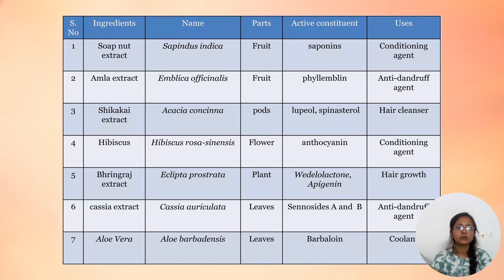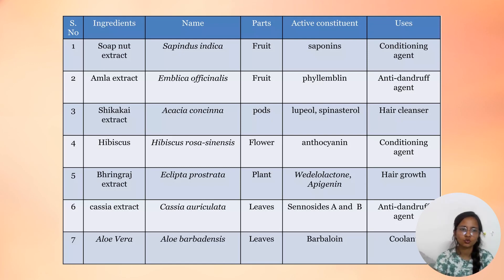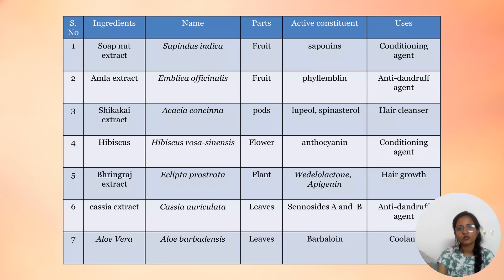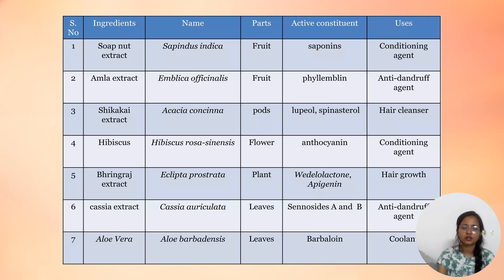In the ingredient table, important parts are herbal ingredients, their parts, and uses. Soap nut extract — fruit, used for conditioning. Amla extract — fruit, used for anti-dandruff. Shikakai extract — parts, used as hair cleanser. Hibiscus — flower, used for conditioning. Cassia extract — plant, used for hair growth. Cassia extract — leaves, used as anti-dandruff. Aloe vera — leaves, used as cooling agent.